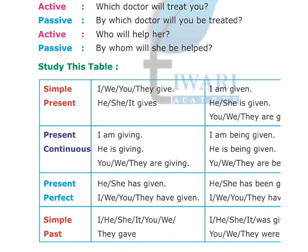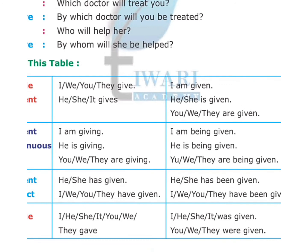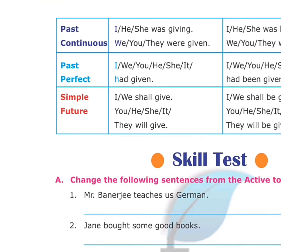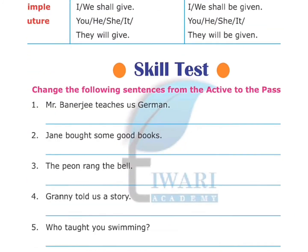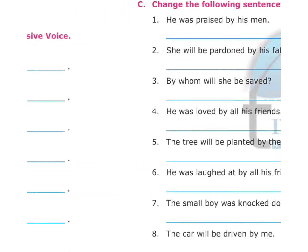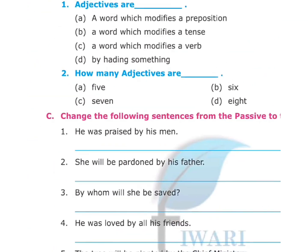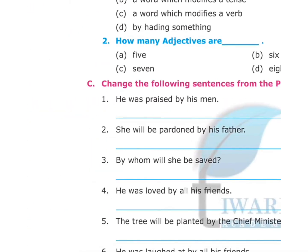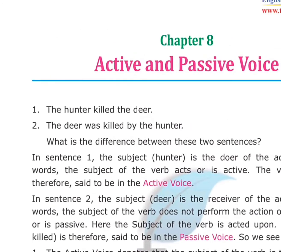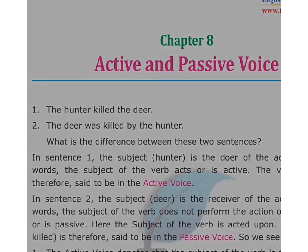Look at the study table showing simple present, present continuous, present perfect, and simple past passive forms — note down this table in your notebook. This chapter also includes a skill test with sections A, B, and C to complete in your notebook. This is your today's assignment. Please revise this chapter again.